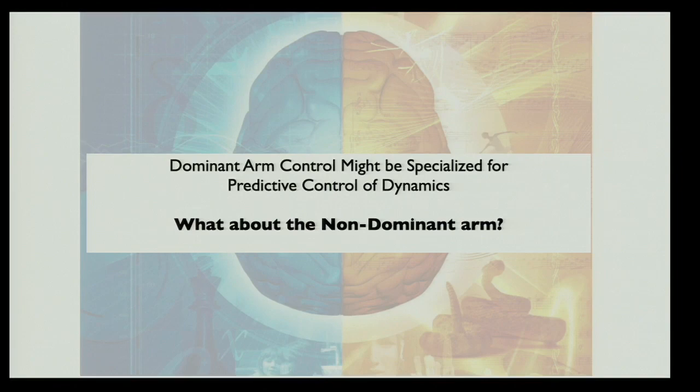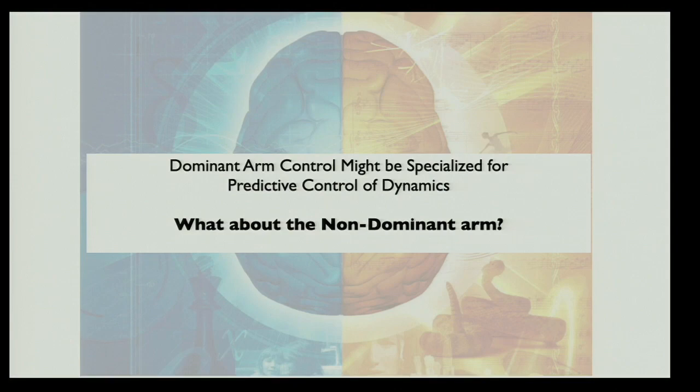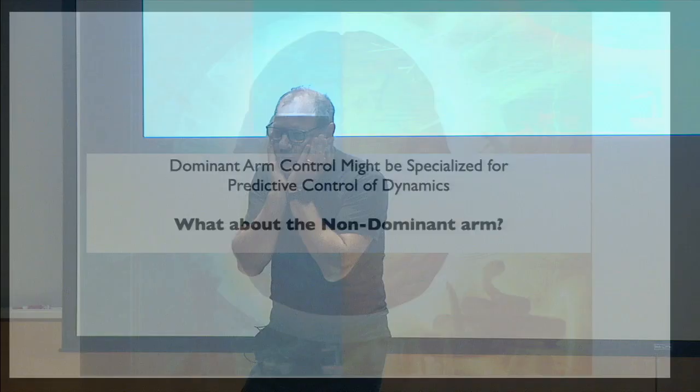The hypothesis is that the dominant arm controller — the left hemisphere — seems to be really good at making efficient movements that reflect something like optimal control. But what about the non-dominant arm? How many people here work with stroke patients? And how many have dealt with aphasia?